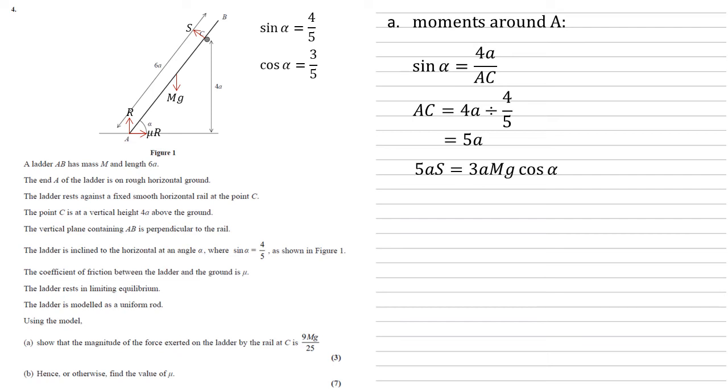Both sides have got A so we can cancel them out and replacing our cos alpha with 3 fifths gives us that 5S equals 3MG times 3 fifths. Divided by 5 and simplifying gives us S equals 9MG over 25 as required.